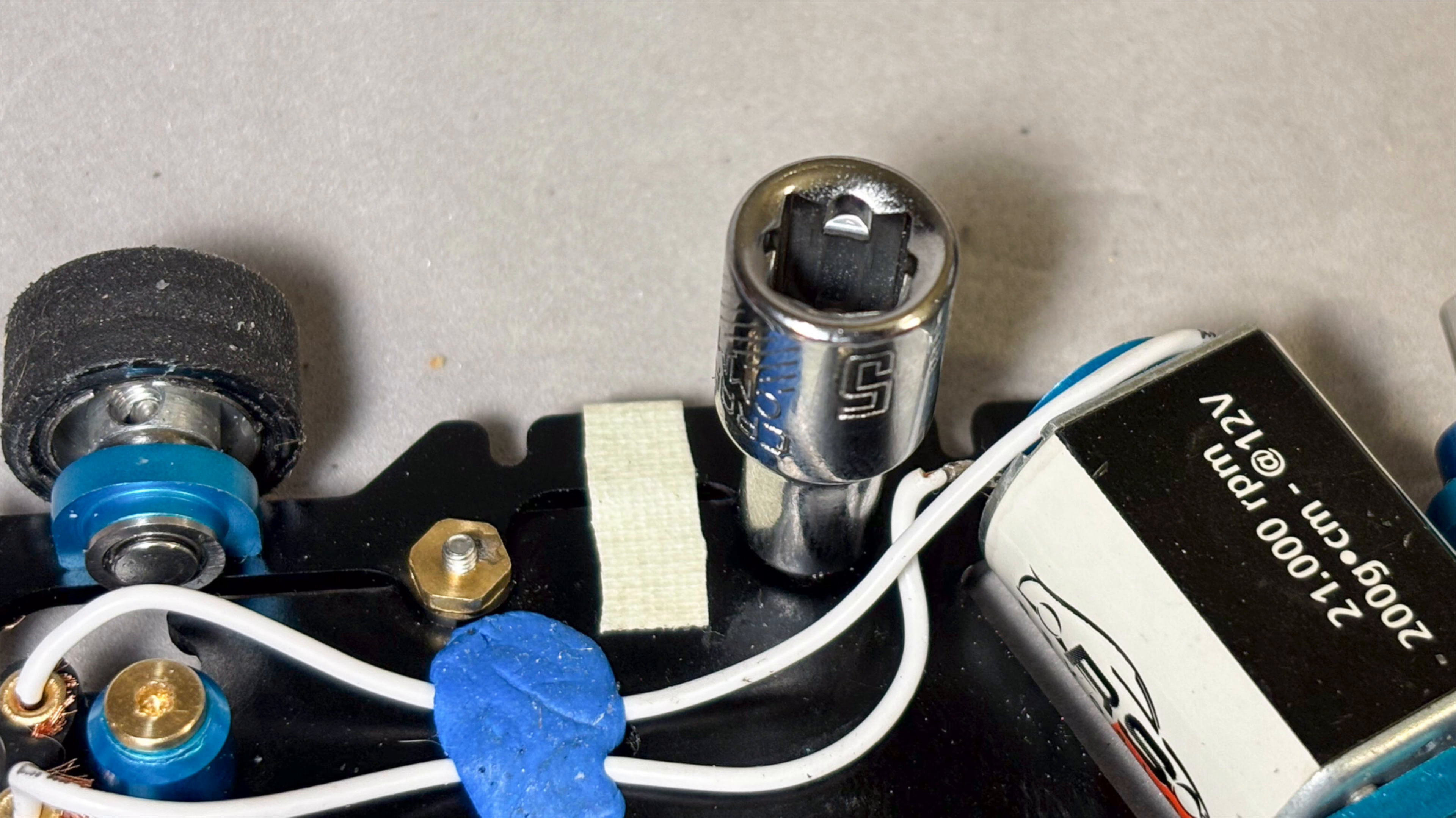The brass nuts that hold the two chassis pieces together are 5 millimeters. I use a standard 5 millimeter socket instead of a nut driver because you don't often change these at the track, and if you need to, it takes up much less space in my pit box.